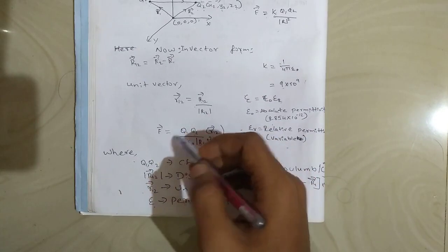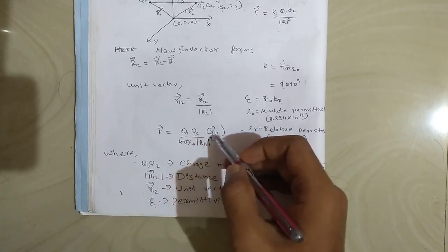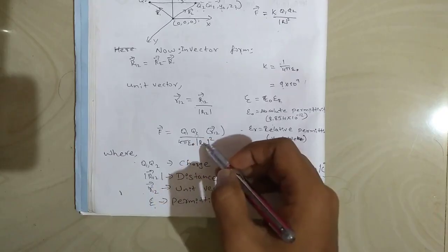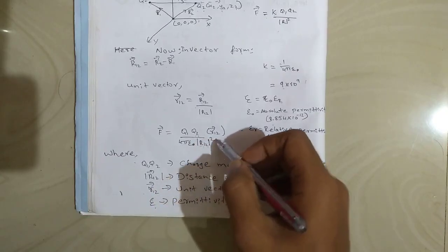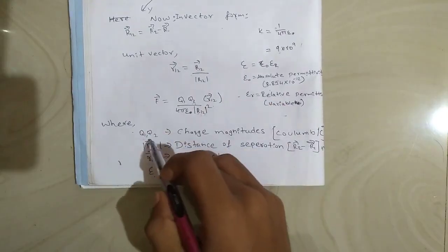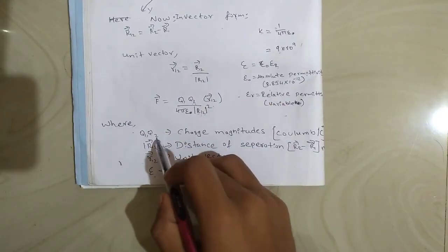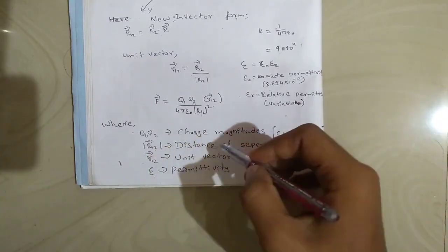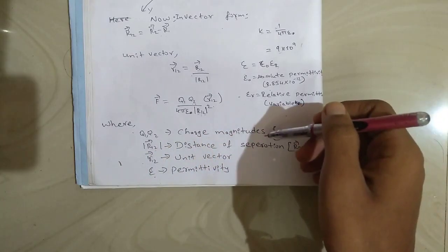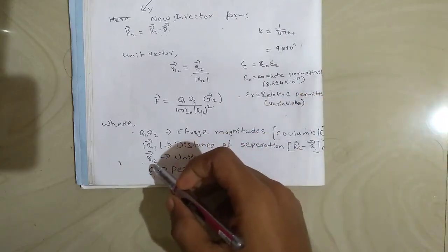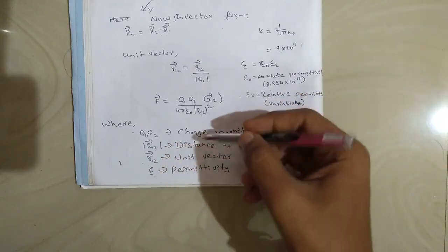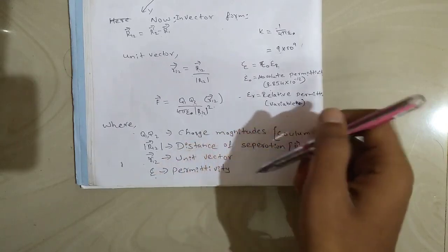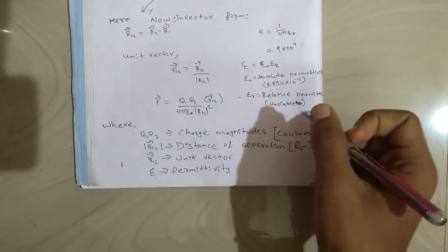The final formula is: force equals q1 into q2 times unit vector r12, divided by 4 pi epsilon naught times magnitude of r12 squared. Here q1 and q2 are charge magnitudes in Coulombs, r12 is the distance between the charges in meters, a-r12 is the unit vector, and epsilon naught is the permittivity of free space.